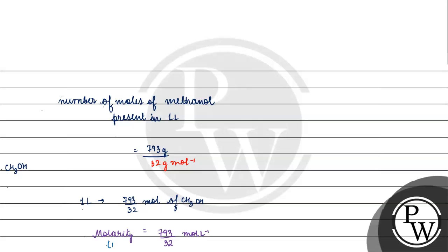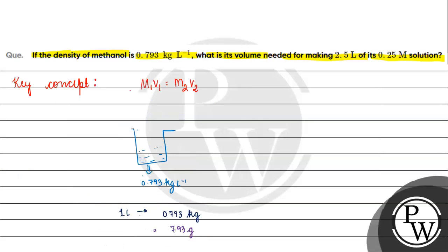We found M1, V1 we need to find, and M2 and V2 are given. For the second solution, M2 is 0.25 molar and V2 is 2.5 liters.